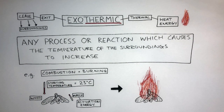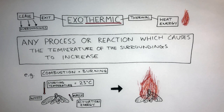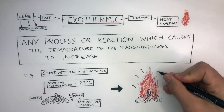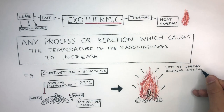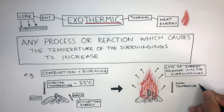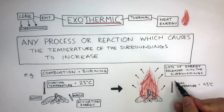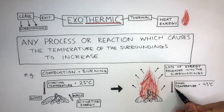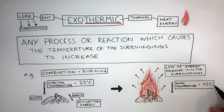Once the wood starts burning and combustion is taking place, the wood is reacting with oxygen to release carbon dioxide and water, and the arrows represent lots of energy being released into the surroundings. The thermometer measures the final temperature being 43 degrees Celsius. The temperature has increased by 20 degrees C due to the heat energy released by combustion. Therefore, as the temperature of the surroundings has increased, this is an exothermic reaction.